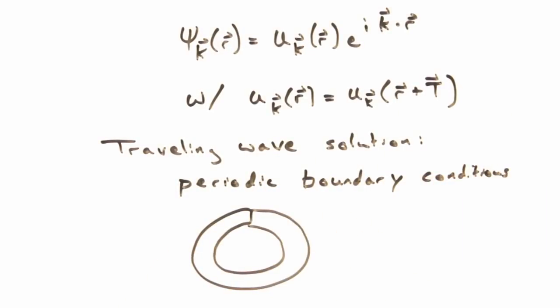So we have a wave function that in some ways reflects the symmetry of the lattice. And also, this traveling wave solution seems to suggest that we must have invoked periodic boundary conditions for the macroscopic solid.